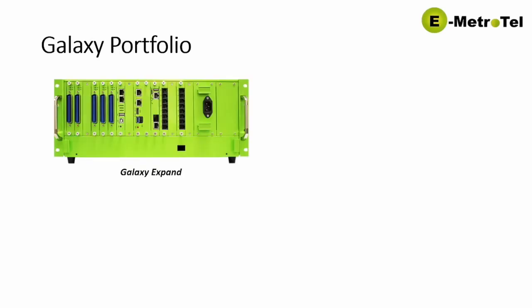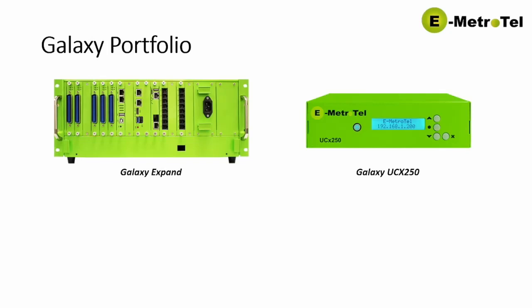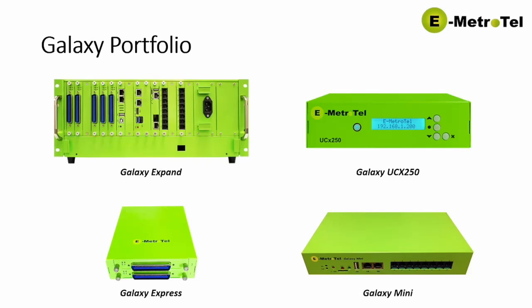From a hardware perspective, we offer our Galaxy portfolio. The portfolio consists of the Galaxy Expand chassis, an 11-slot platform which provides broad flexibility for designing systems for large enterprise customers. We also have our Galaxy UCX 250, a call processing appliance designed for small to mid-sized office and branch locations of up to 100 stations. We have our Galaxy Express, an economical two-slot chassis to provide TDM interface support, or analog and digital interface support, at all sites or branches within an enterprise network. And finally, there's the Galaxy Mini, an appliance-style platform designed to provide an optimized solution for the small end, or less than 32 user market.